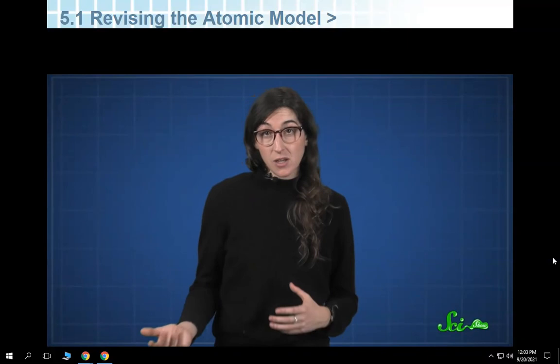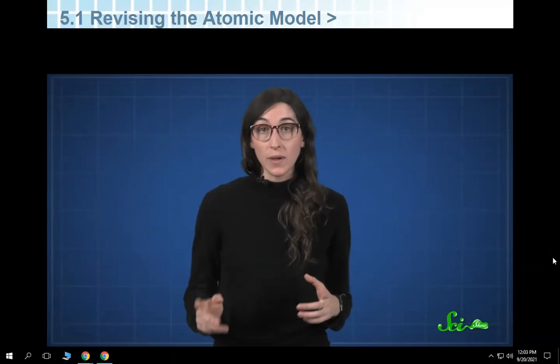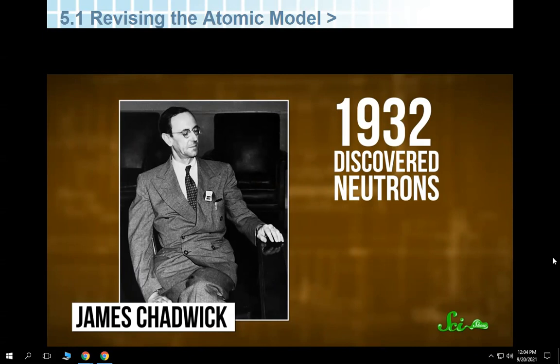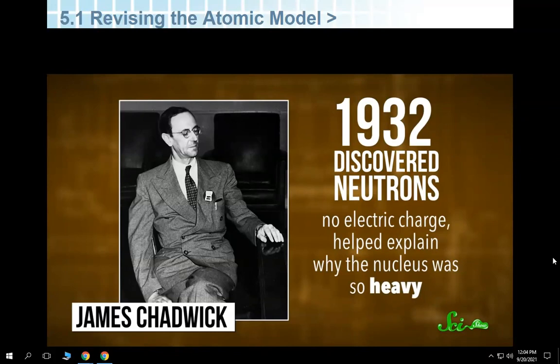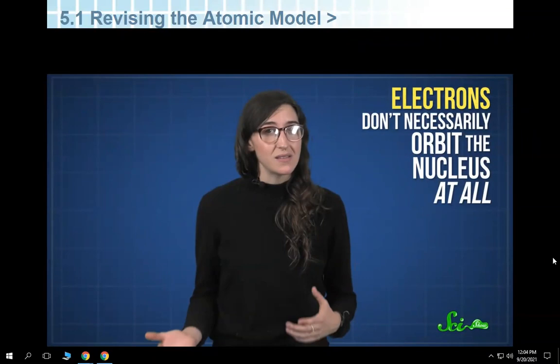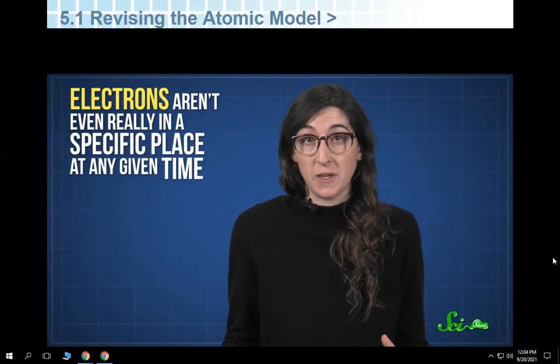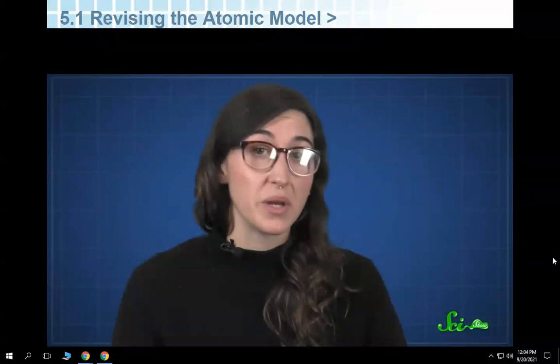Bohr's model quickly became the most popular model of an atom. And it's often used today to show the basic way that an atom is arranged. But it still wasn't totally right. One breakthrough was in 1932, when English physicist James Chadwick discovered that neutrons exist. Neutrons weren't electrically charged, and they helped explain why the nucleus was so heavy. Another breakthrough involved quantum mechanics, and the idea that electrons don't necessarily orbit the nucleus at all. In fact, electrons aren't even really in a specific place at any given time. Instead, they're kind of in lots of different places at once, within a bigger area.